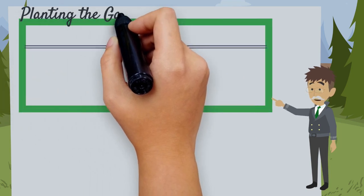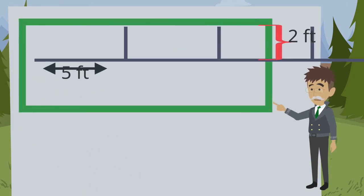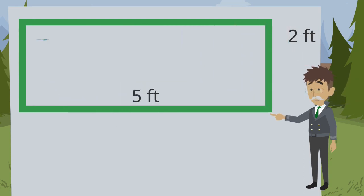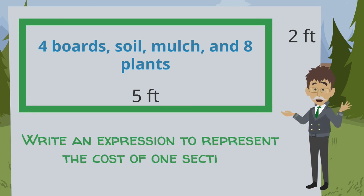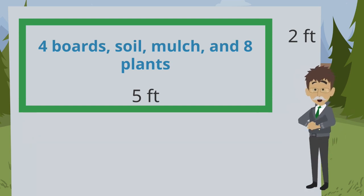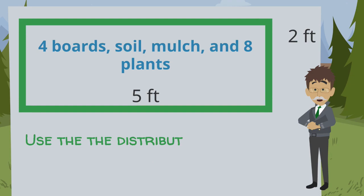I decide to plant the garden area in five by two foot sections. Each section will be composed of four boards, some soil, mulch, and eight plants. Write an expression to represent the cost of one section. I plan to plant four identical sections. Write an expression to represent the total cost of the garden area. Apply the distributive property to write the expanded expression.